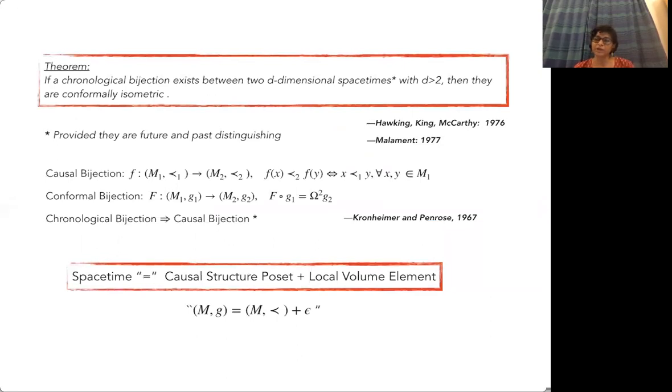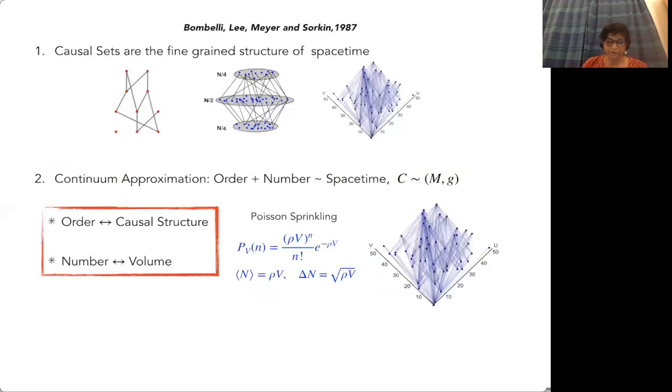This gives you a new way of thinking about spacetime in terms of the causal structure POSET. The conformal class is contained there, and the only missing ingredient is a local volume element. We think of spacetime as causal structure POSET plus this local volume element. As Finkelstein quipped, the causal structure is nine-tenths of the metric because the volume element is just a scalar.